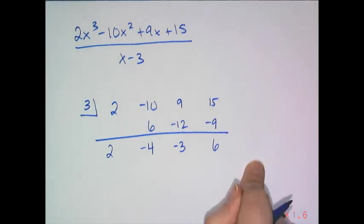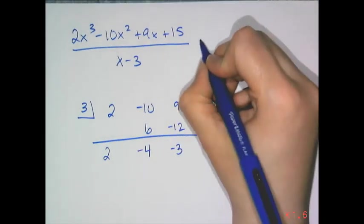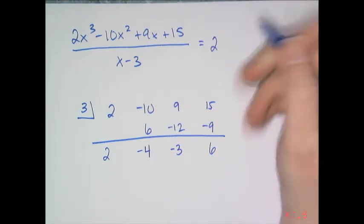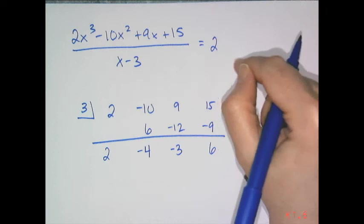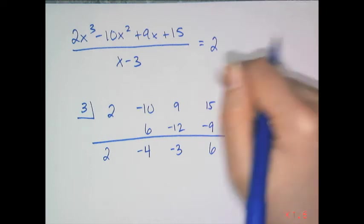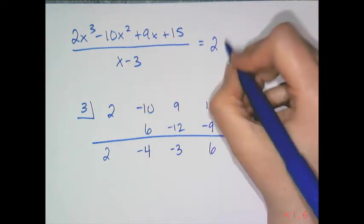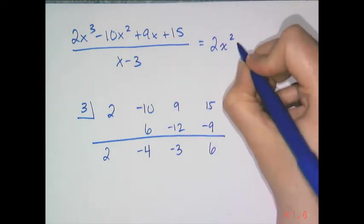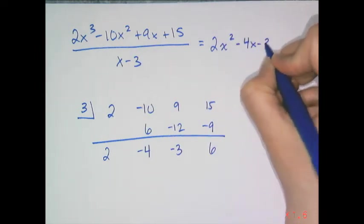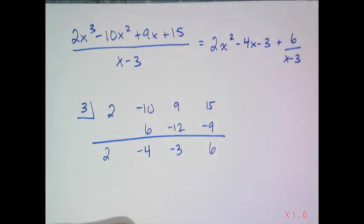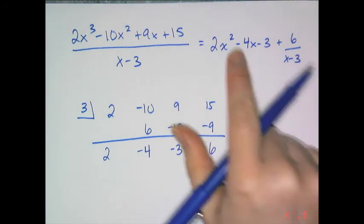15 plus negative 9 is 6. So what these numbers down here give me are the things I need. This tells me that I get 2. Now since I divided by x minus 3, the x value in this quotient is 1 degree lower. So it's not an x cubed anymore, it's an x squared. Then I get a minus 4x, a minus 3, and a remainder of 6. That's what synthetic division gives me.